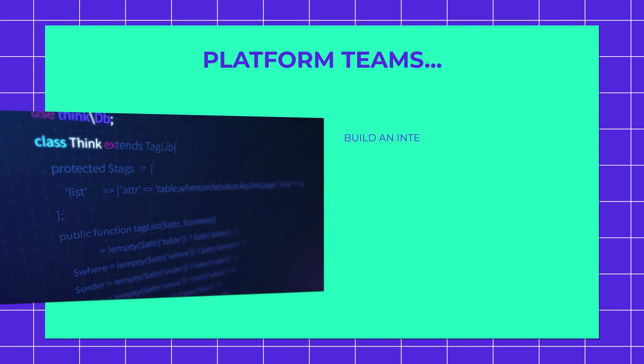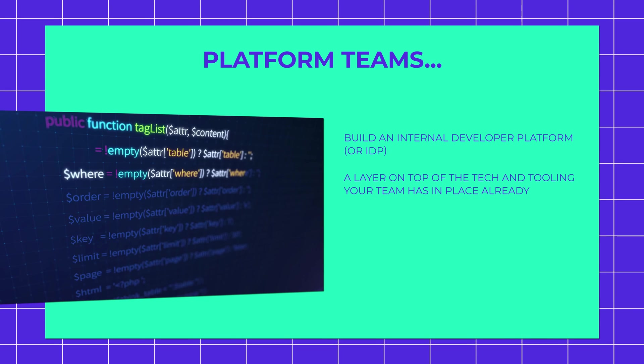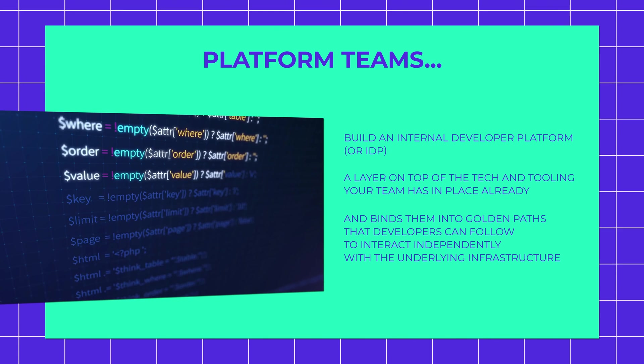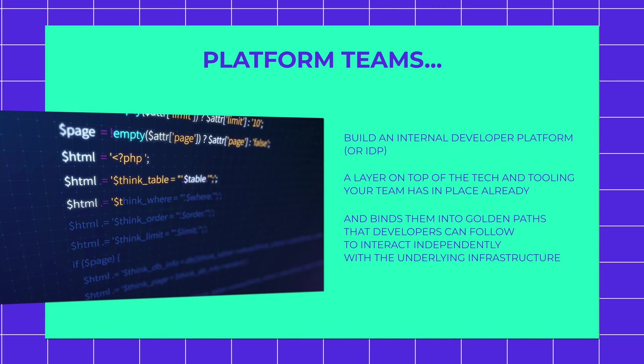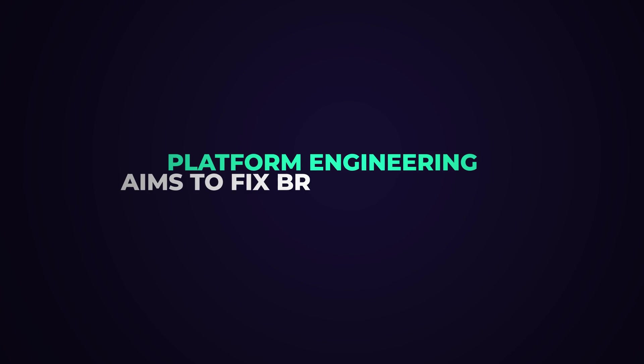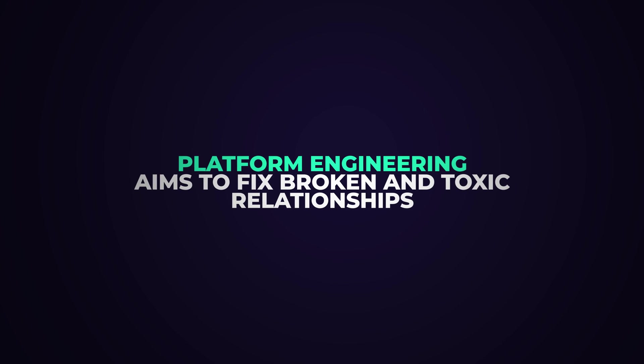Platform teams build an internal developer platform, or IDP, which is a layer on top of the tech and tooling your team already has in place, and binds them into golden paths that developers can follow to interact independently with the underlying infrastructure. They can self-serve environments, databases, and whatever they need to run their apps and services without having to wait on Ops. Platform engineering therefore aims to fix broken and toxic relationships between developers and operations by enabling self-service for developers and allowing operations to focus on infrastructure challenges.